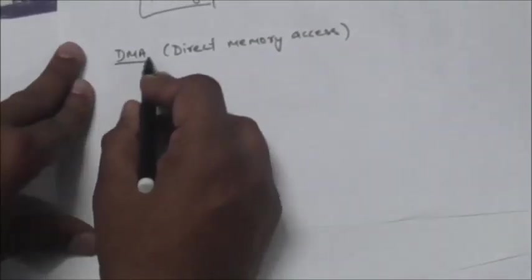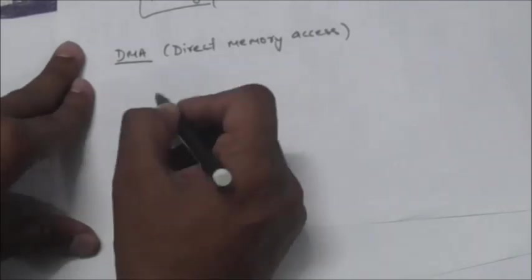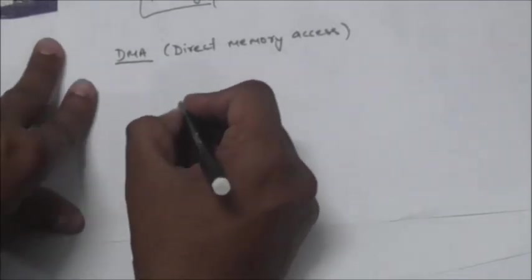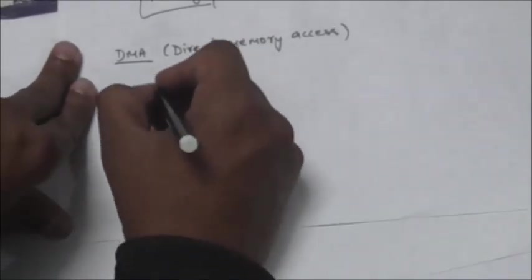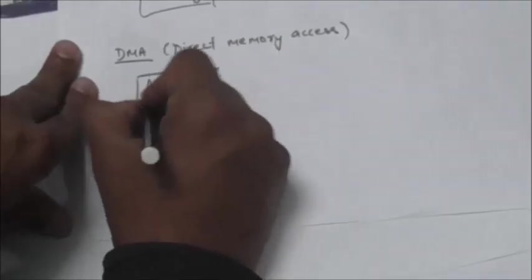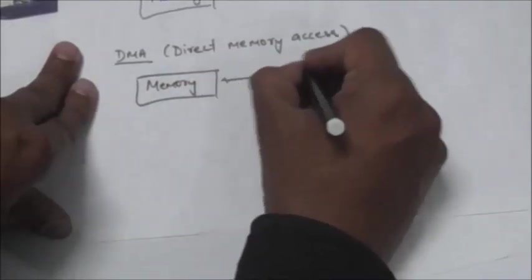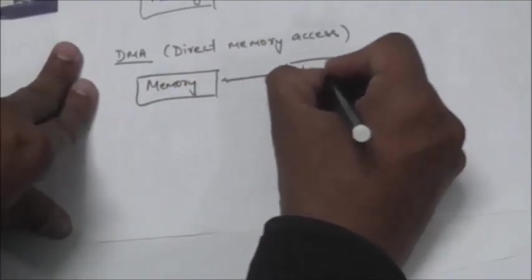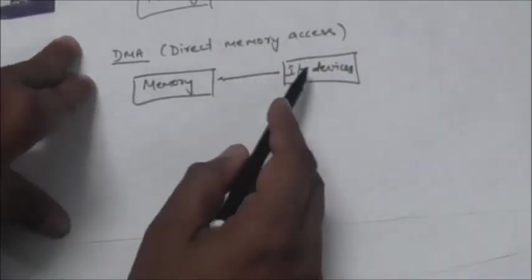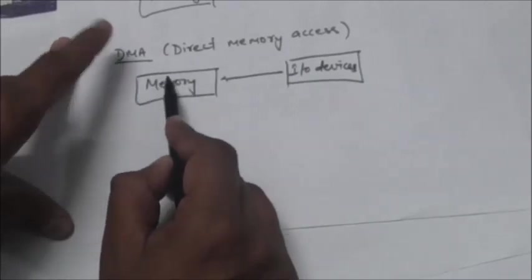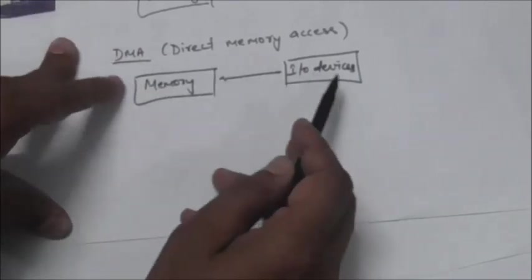In this method, in direct memory access method, the input and output devices can directly access the memory without the intervention of the CPU. So this method allows peripheral devices to transfer data directly from and to memory without the intervention of the CPU.